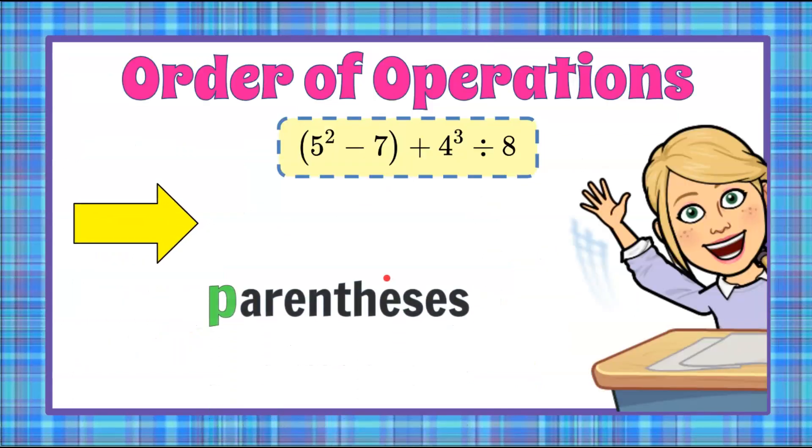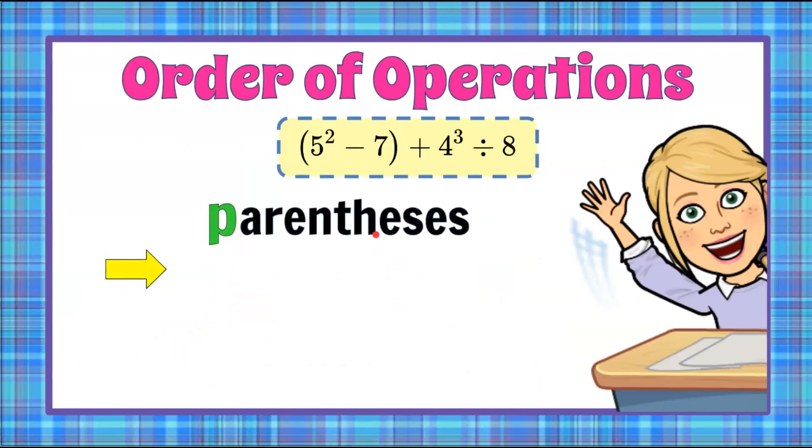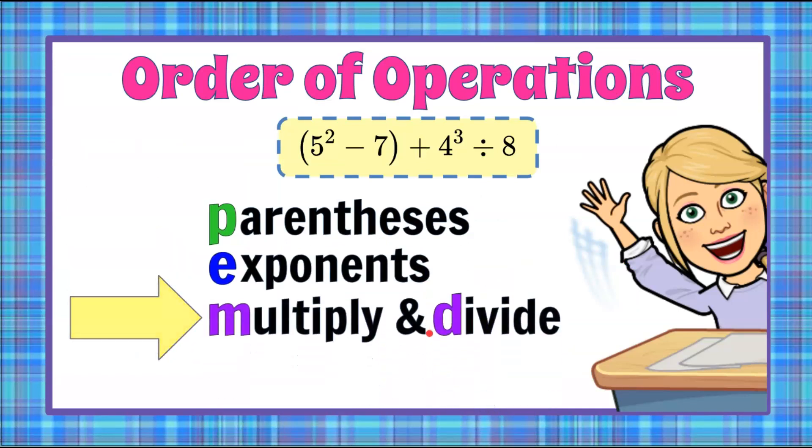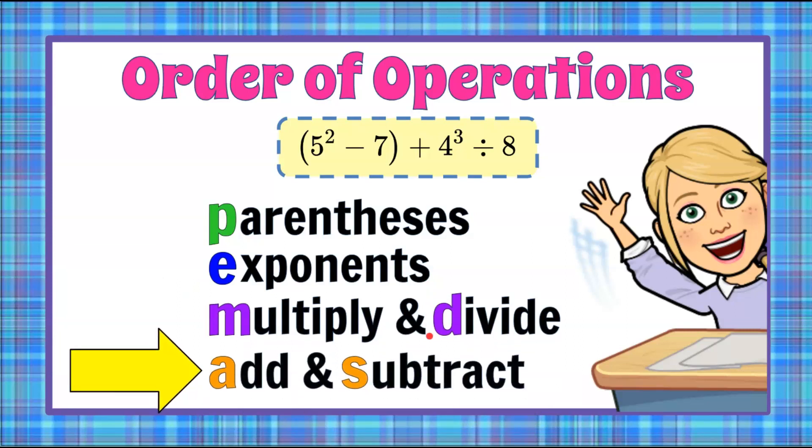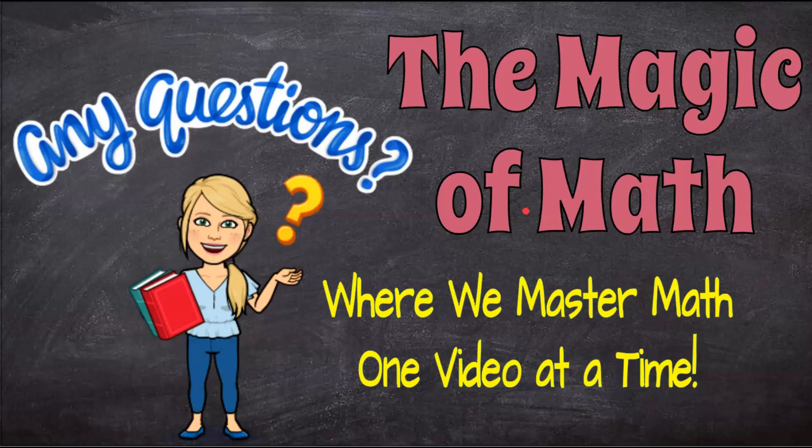So there you have it. Order of operations. Clear your parentheses, clear your exponents, multiply and divide in order from left to right, and then conclude by adding and subtracting from left to right to find the value of an expression. And that's the magic of math where we continue to master math one video at a time. Thanks for joining me today and I hope you come back soon.